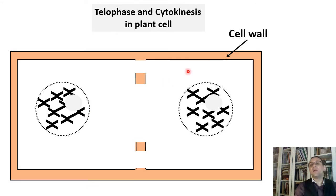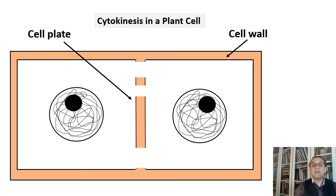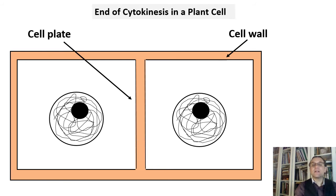As you know, plant cells have cell walls. Therefore, cytokinesis in plants occurs differently. There is no cleavage furrow. Instead, a cell plate appears that grows and divides the cell into two cells, as shown in the diagram. So here is the end of cytokinesis in plant cells.